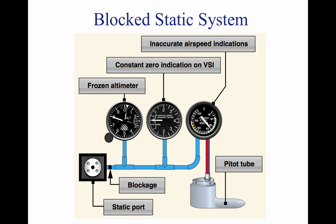If the static system becomes blocked but the pitot tube remains clear, the ASI continues to operate. However, it is inaccurate. If the aircraft descends, the static pressure increases on the pitot side, showing an increase on the ASI. This assumes that the aircraft does not actually increase its speed. The increase in static pressure on the pitot side is equivalent to an increase in dynamic pressure, since the pressure cannot change on the static side.